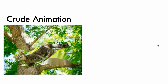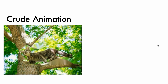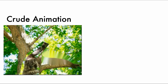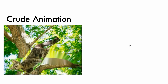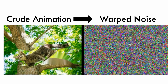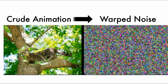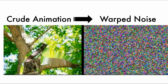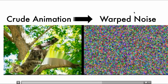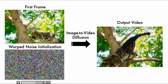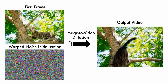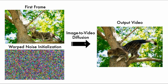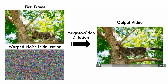But let's break it down into steps. The first thing that happens behind the scenes is that a crude animation is created where the cat is cut out and dragged across the screen. From that crude animation, we generate warped noise. Don't worry exactly what this is — we'll talk about it more in a minute. But just notice how the noise moves with the cat. Given this warped noise as an initialization for the diffusion process along with the first frame, our fine-tuned image-to-video diffusion model generates the outputs you see here.